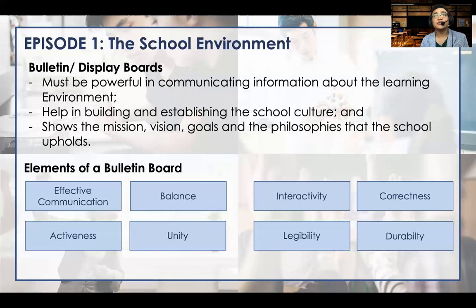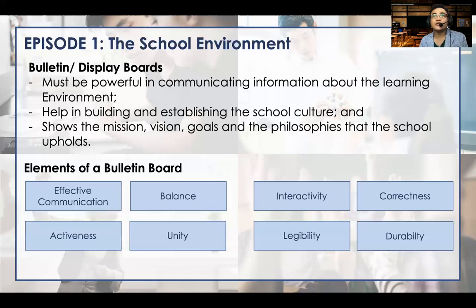For the school environment, I recommend an activity for you to navigate your school. Take a look at your school and check all the facilities — the principal's office, the registrar, the lobby, the classrooms, the gymnasium, the open grounds, the cafeteria, and the comfort room. Those are important locations that should be considered for learning, because we want our students to feel that the school is their second home. That's it for Episode 1 — stay tuned for Episode 2. Thank you and God be with you.